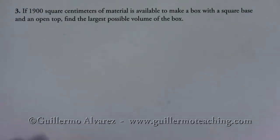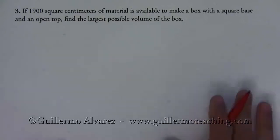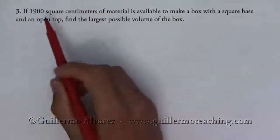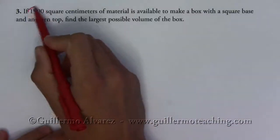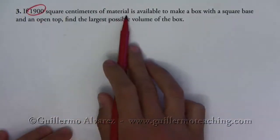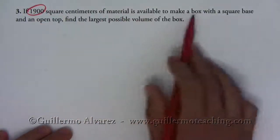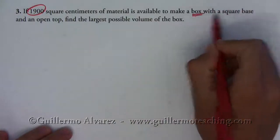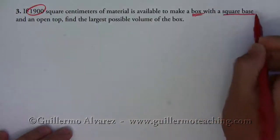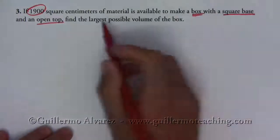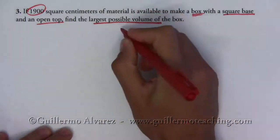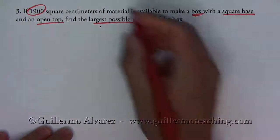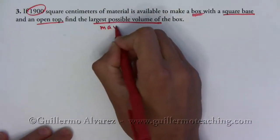We have 1900 square centimeters of material available to make a box with a square base and an open top. Find the largest possible volume. So let's write some stuff down.